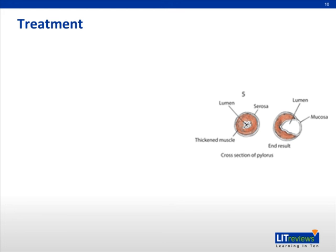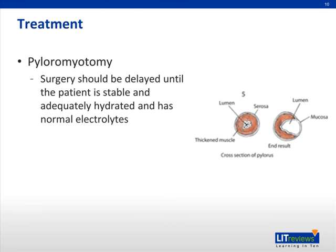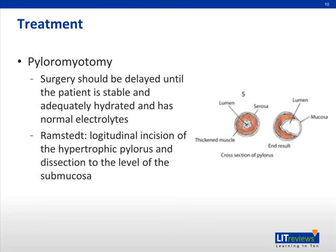Treatment for this condition is exclusively surgical. Pyloromyotomies have been performed regularly for this condition. Surgery should be delayed, however, until the patient is stable and adequately hydrated with a return to normalcy of their electrolytes. The procedure involves a longitudinal incision of the hypertrophic pylorus and dissection to the level of the submucosa, which allows the lumen of the pylorus to be opened and no longer compressed by the thickened muscle. Another possible intervention is balloon dilation, but this is not as effective at disrupting the seromuscular ring which is causing the obstruction.